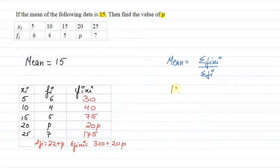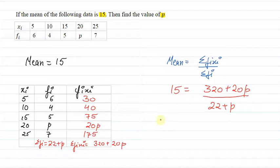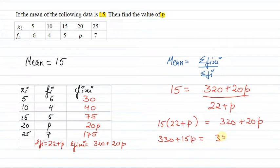Summation of fi is 22 plus P. So mean equals summation of fi xi by summation of fi. 15 equals 320 plus 20P divided by 22 plus P. Let's multiply, 15 into 22 will be equal to 330. 330 plus 15P is equal to 320 plus 20P.